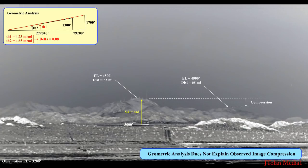So it's quite a drastic drop. The geometric analysis does not explain the observed image compression — something else is going on. And that's the exciting part, folks. So what's really going on? As you probably guessed, there is some refraction that's occurring. But is it only atmospheric, or is there something else?